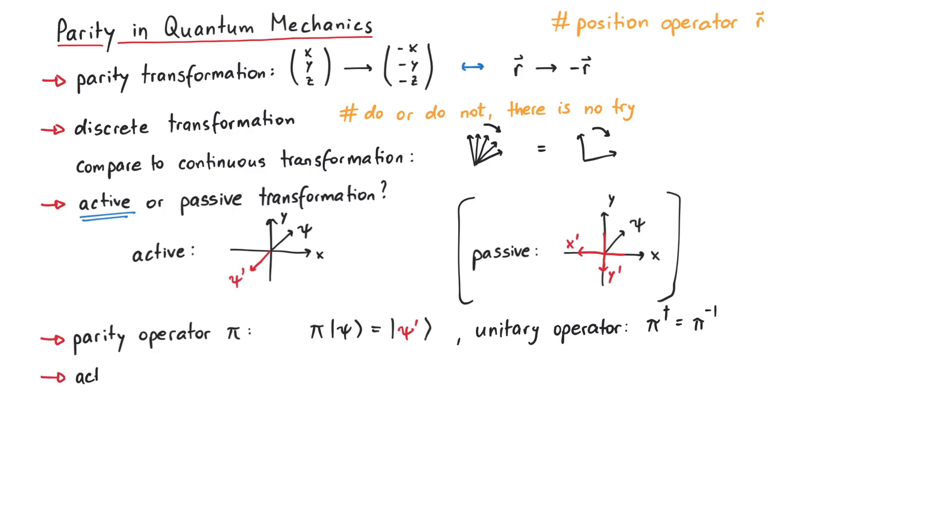Next, if we let pi act twice on the same wavefunction, we should get the original wavefunction back, maybe including an overall phase factor. But since such an overall phase cannot be observed, we can just absorb it into the parity operator, such that applying pi twice is the same as the identity operator. This means that pi is the same as its inverse, and the inverse is the same as the Hermitian conjugate.